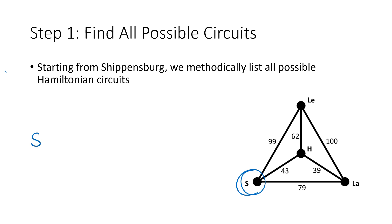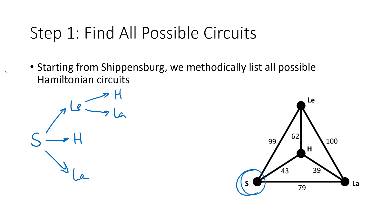We're starting at Shippensburg, and we have three choices for where to go second: we could go to Lewisburg, Harrisburg, or Lancaster. From those second locations, we go to another location. If we went from Shippensburg to Lewisburg, our choices are either Harrisburg or Lancaster next. If we went to Harrisburg second, we'd choose Lewisburg or Lancaster. And if we went to Lancaster first, our choices would be Lewisburg or Harrisburg.